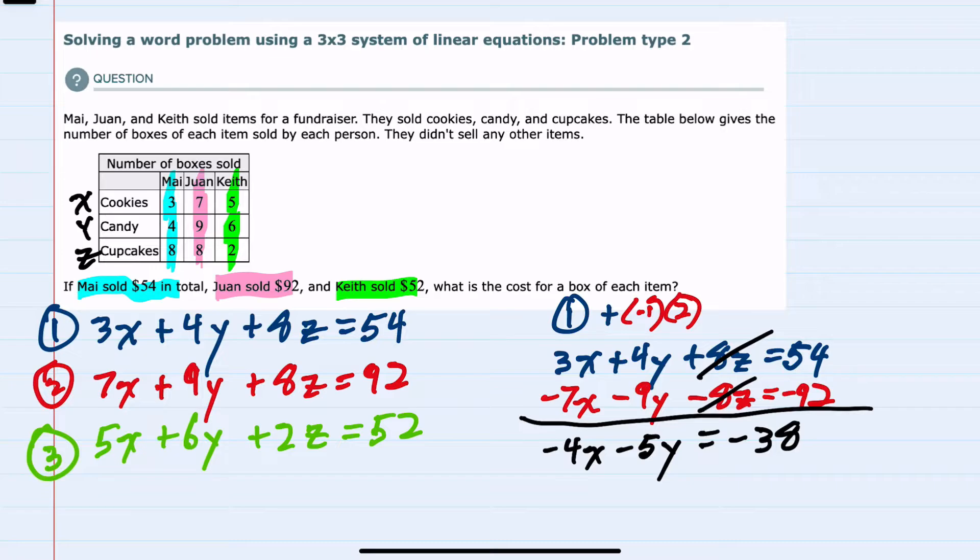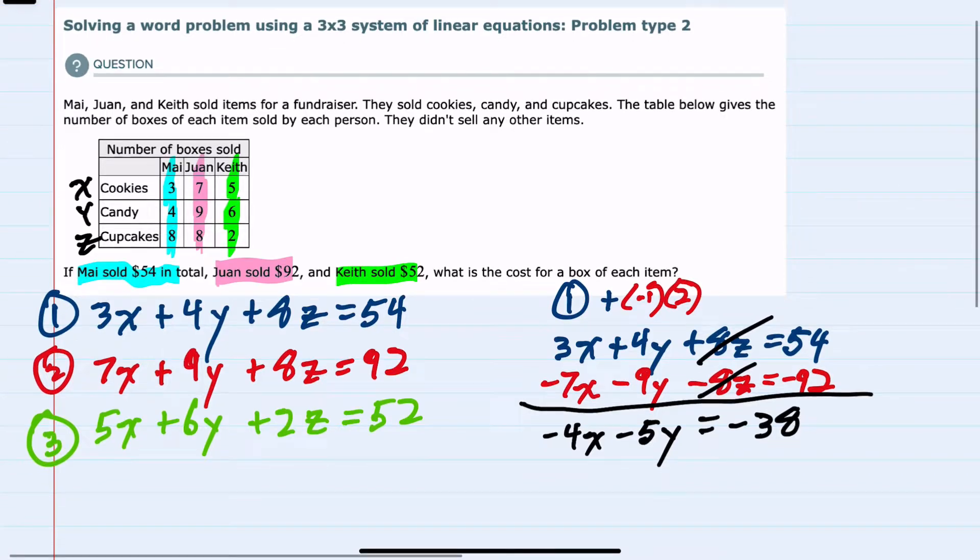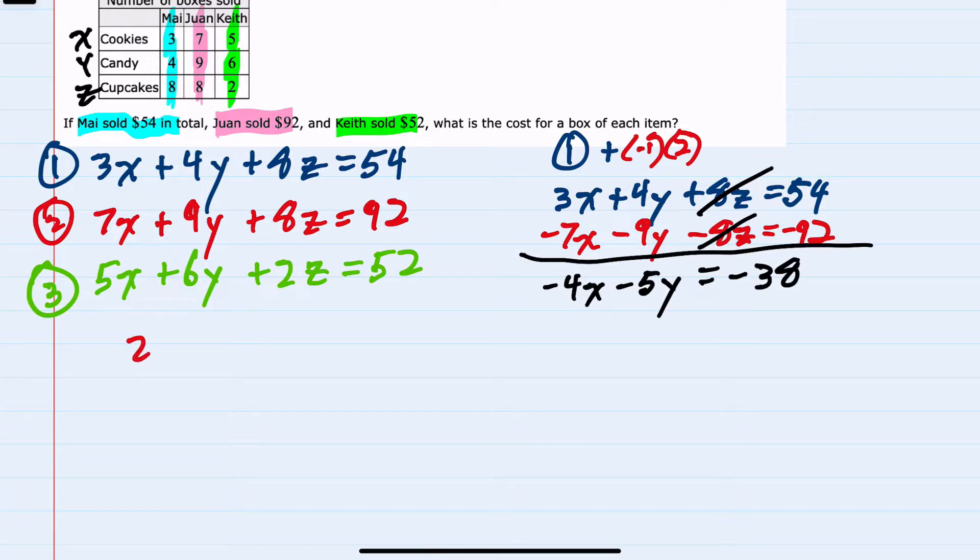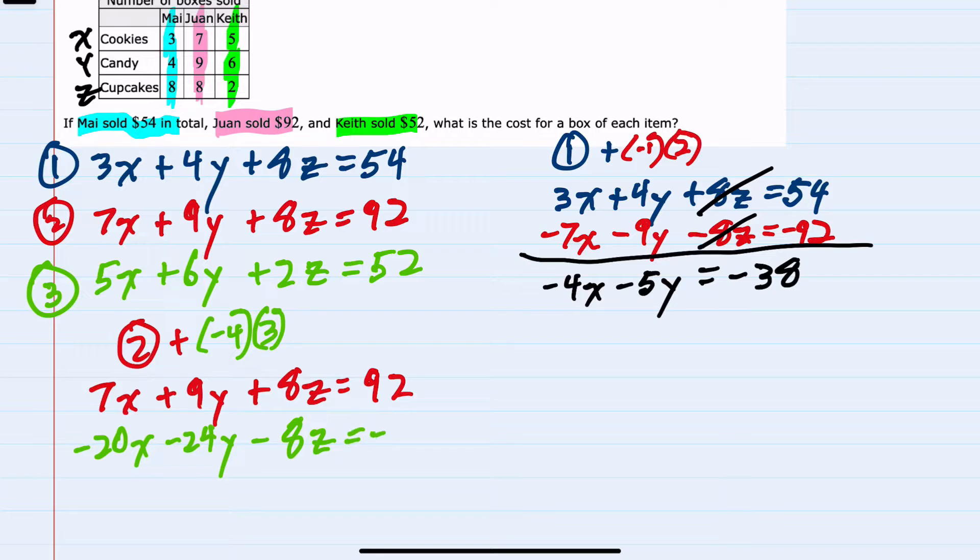So we used equation one and equation two to eliminate the Z's. Now I need to use different equations to again eliminate the Z's. And one way to do that would be to take equation two, and to add to that, equation two has an 8Z, equation three has a 2Z. If I multiplied equation three by a negative four, that would give me a negative 8Z for that last term, and then adding would cancel. So again, writing vertically, I have equation two as it is. Equation three, though, I'm multiplying everything by negative four. So negative four times 5X, negative 20X, negative four times a 6Y would be negative 24Y, negative four times a 2Z is a minus 8Z, and a negative four times 52 is a negative 208.